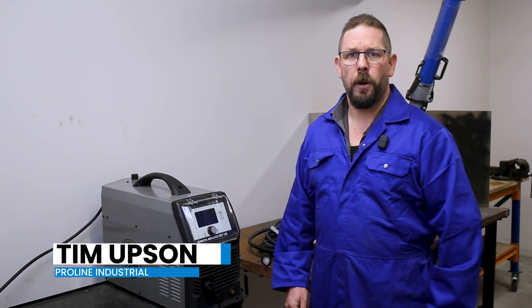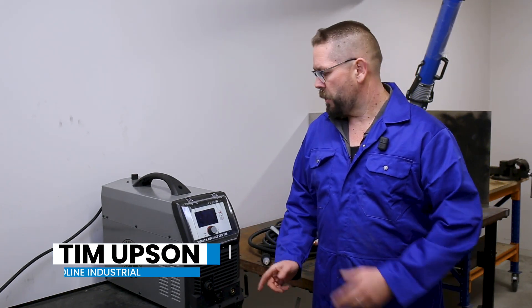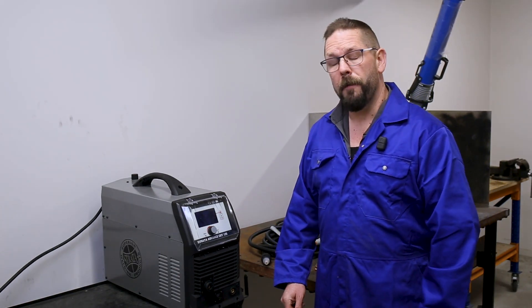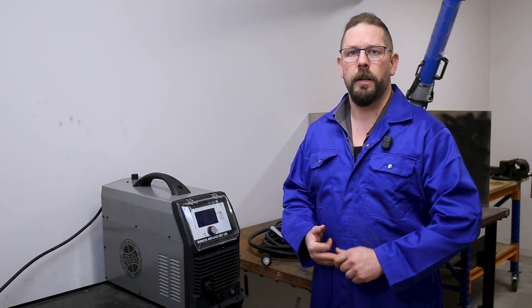My name's Tim. I'm part of the team at ProLine Industrial. Today we're going to be looking at the Strata Advanced Cut 125. This machine comes with an 8 meter machine cutting torch and a 6 meter handheld cutting torch.